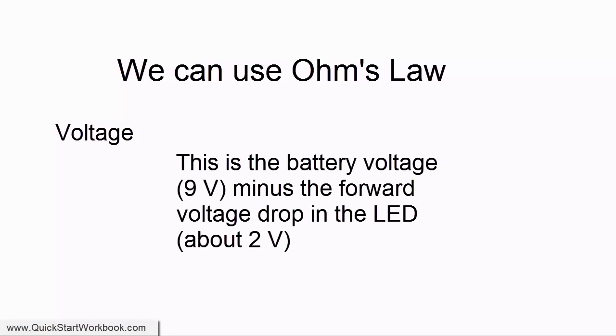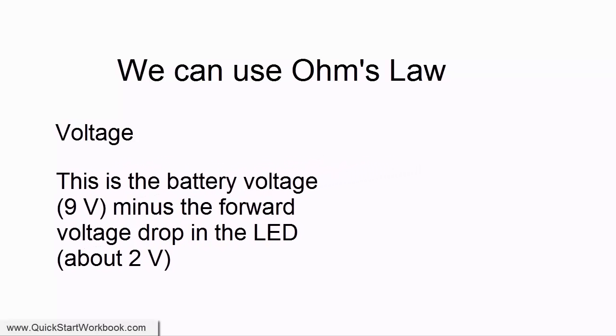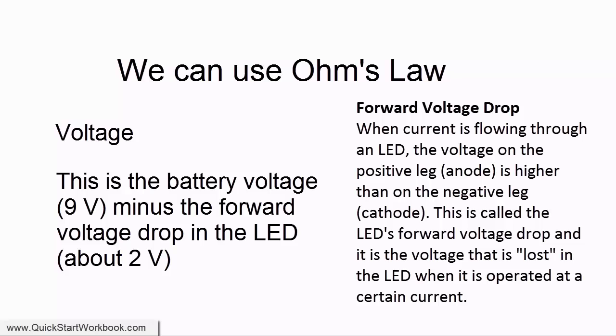So as stated here the voltage is the battery voltage which is 9 volts minus the voltage drop across the LED. So the forward voltage drop is the voltage that is lost in the LED when it is operated at a certain current.